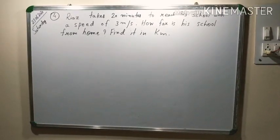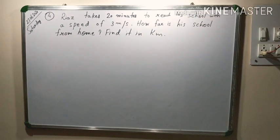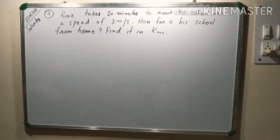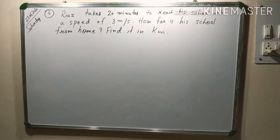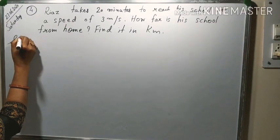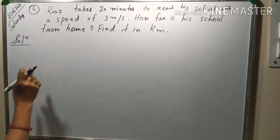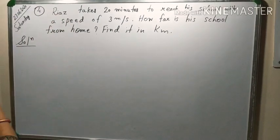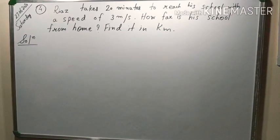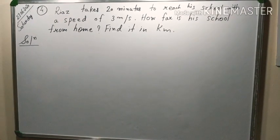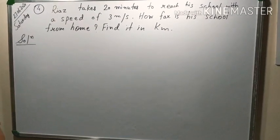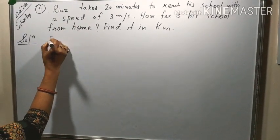4th question was Riyaz takes 20 minutes to reach his school with a speed of 3 meter per second. How far is his school from home? Find it in kilometer. In this, all these information are here in minute and it is in meter per second. So, we can find out the distance first in meter and then we can convert it into kilometer. So, given information is speed equal to 3 meter per second.